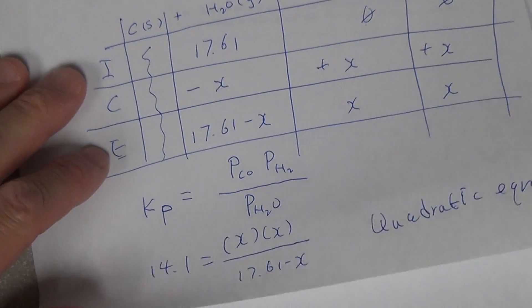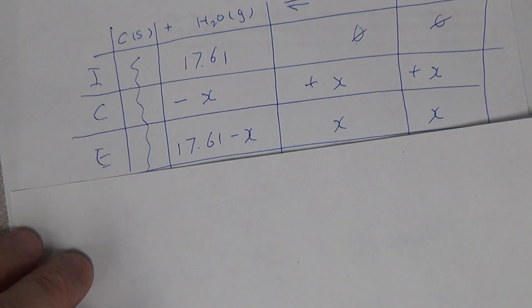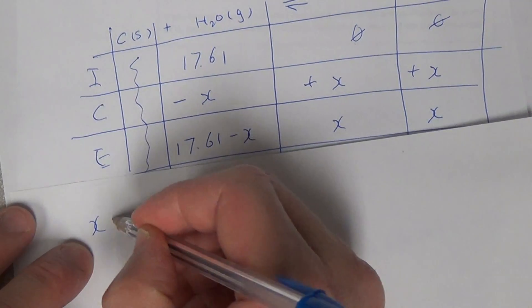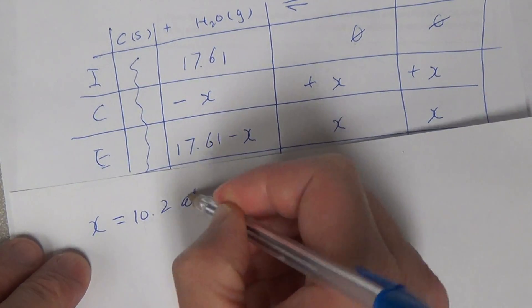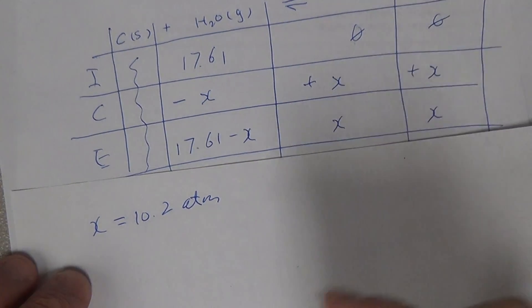So we have this ICE table. Now we find out x equals 10.2 atm.